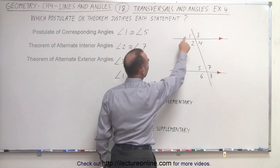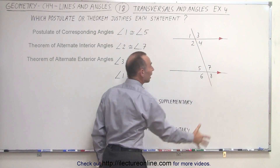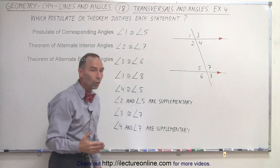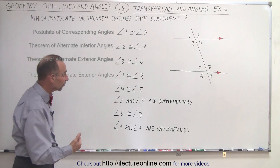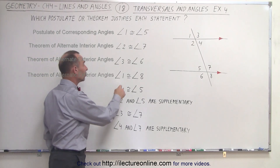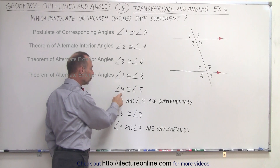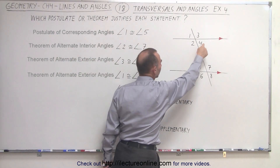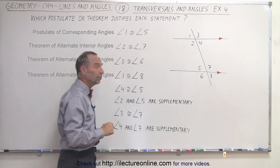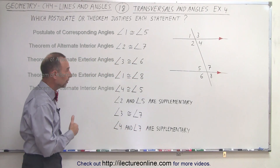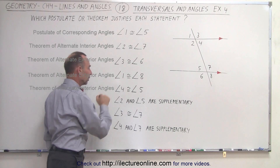Angle one and angle eight — if they're to be congruent, we can say so because they're also what we call alternate exterior angles, and by the theorem of alternate exterior angles they must have the same measure. Angle four and angle five are alternate interior angles, and by the theorem of alternate interior angles they have the same measure, therefore they are congruent.